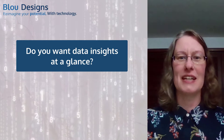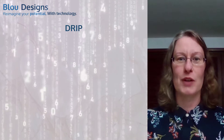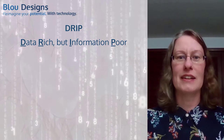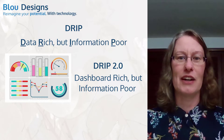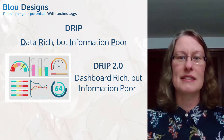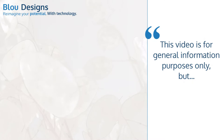You want data insights at a glance, but it's hard to digest and process a large volume of data, and you're creating and collecting more data all of the time. You're suffering from DRIP — you're data-rich but information-poor. To get information, you turn to dashboards, but if you don't design them correctly, you can become dashboard-rich but information-poor: what I'll call DRIP 2.0. In this video, I'll talk through three steps with guides for designing dashboards to generate insights for business decisions while avoiding all forms of DRIP.